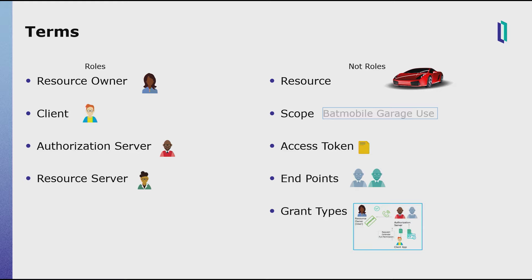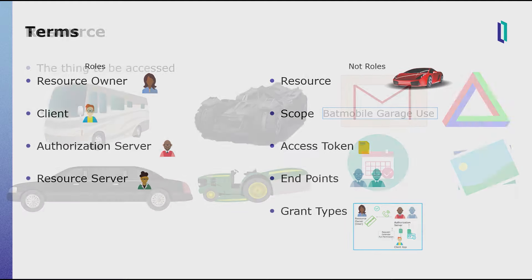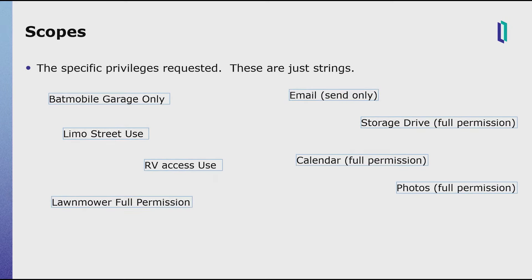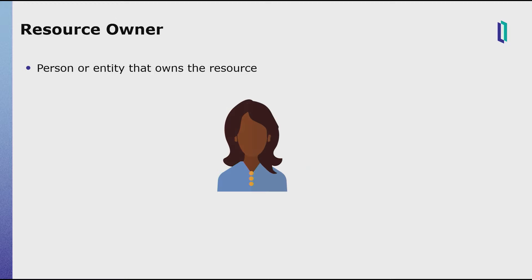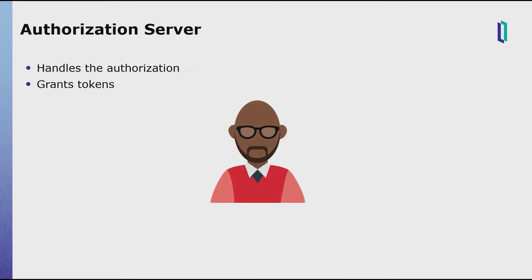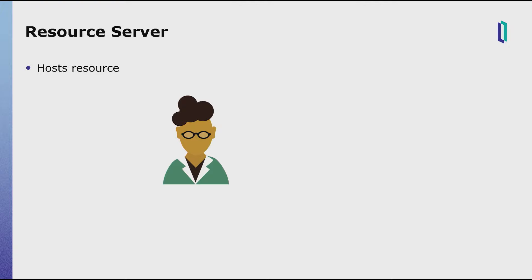Here are the main roles and terms. Roles in OAuth 2 simply refer to the different entities or parties involved. The resources are the things to be accessed — the particular data or operations the applications want to get a hold of. Scopes are the specific permissions being requested; they're just strings that the different parties interpret based on their own logic. A resource owner is the person or entity that owns the resource and is able to grant access to others — usually a human user, but could be a service account. The client is the application requesting access to the resource, sometimes also called the relying party. The authorization server is the entity that grants access tokens to the client after the owner gives authorization. The resource server is the server that actually hosts the resource and, when presented with the token, gives the client the actual access it wants.